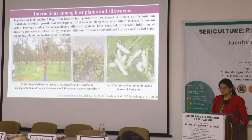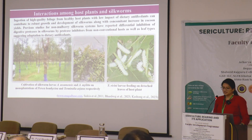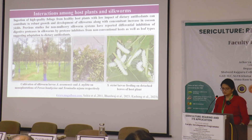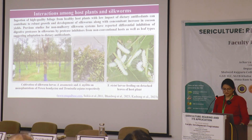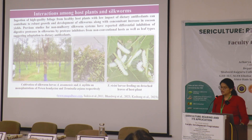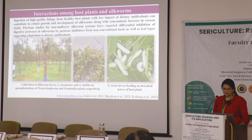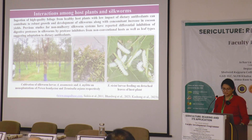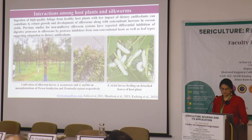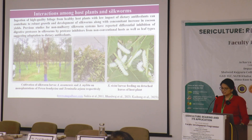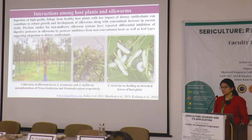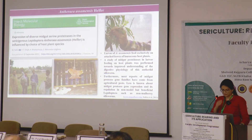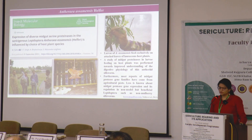Plant protease inhibitors are dietary antifeedants. Ingestion of high-quality foliage from healthy host plants with low levels of dietary antifeedants can contribute to robust growth and development of silkworms, along with a concomitant increase in cocoon yield. Previous studies for non-mulberry silkworm systems have reported differential inhibition of digestive proteases by protease inhibitors from non-conventional hosts as well as different leaf types, suggesting an adaptation to dietary antifeedants. This study was published in 2011.